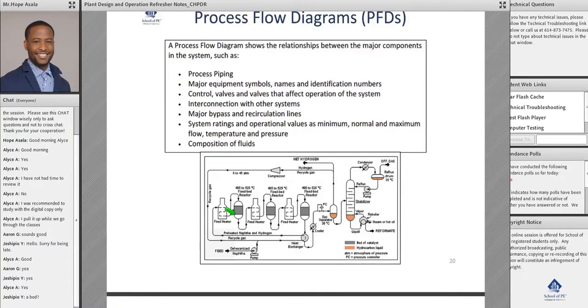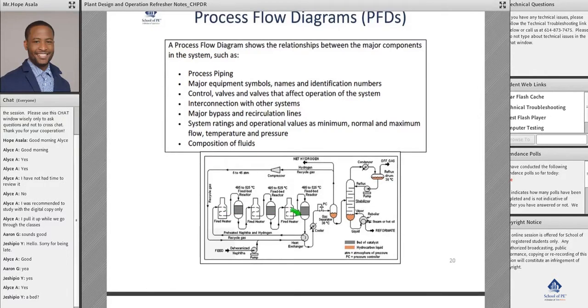The process flow diagram is going to give you more about conditions, the ratings, the interconnectivities. You can go to the cooler and then also go to the heat exchanger and bypass. All these conditions are actually well stated - pressure conditions. You can see the compressor is telling you between 5 to 45 atm.